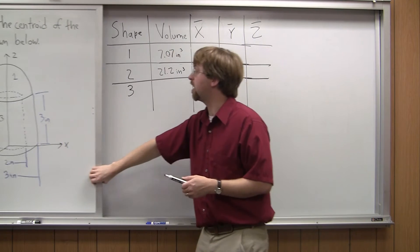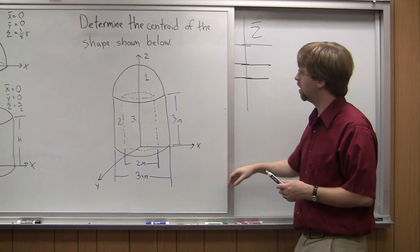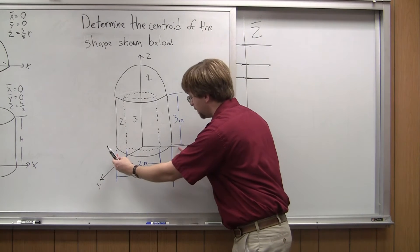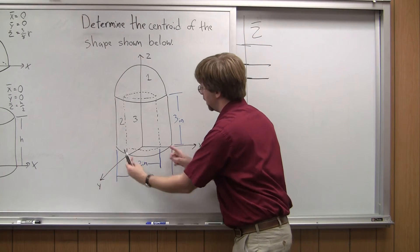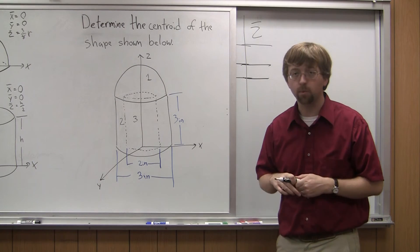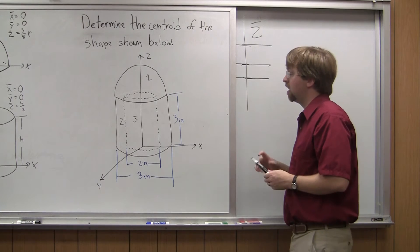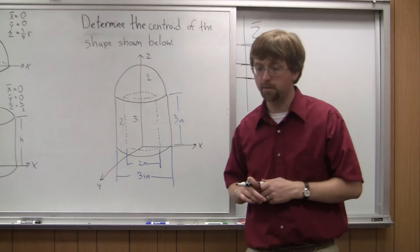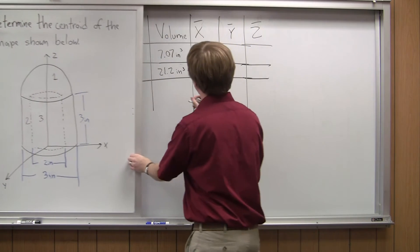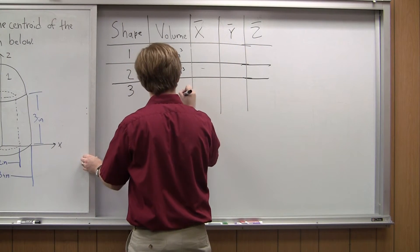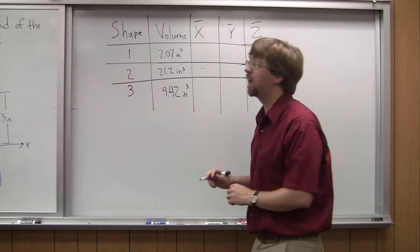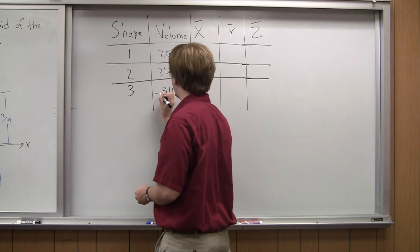The last one is going to be my cutout. This is a cylindrical cutout, so my radius changes — the diameter is now 2 inches, giving a radius of 1 inch. Pi times 1 squared times my height of 3 inches gives me a value of 9.42 cubic inches. And again, since this is a cutout, I count this as a negative volume.